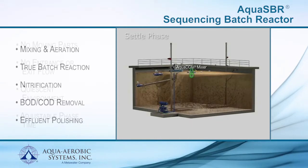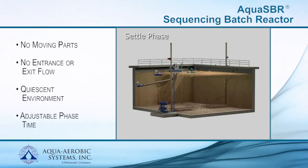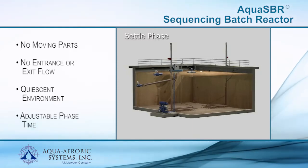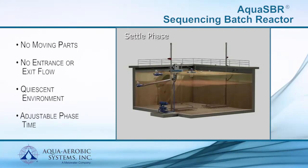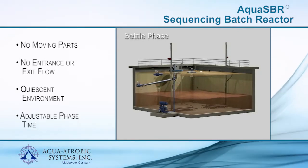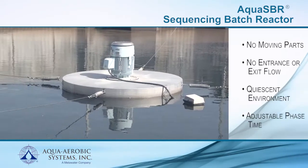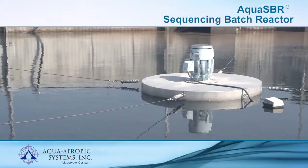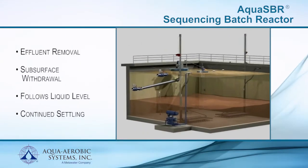In the Settle phase, influent flow is terminated and mixing and aeration equipment are turned off. Ideal solids-liquid separation is achieved due to the quiescent environment, allowing the reactor to function as a perfect clarifier. Operational flexibility allows the user to adjust the settling time to match the prevailing needs of the plant. Due to the batch feature, the Settle phase is unaffected by flow variations that cause disruption in conventional flow-through secondary clarifiers.